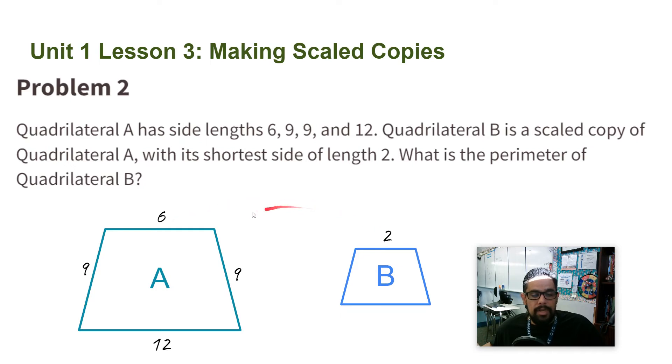I use 6 and 2. These are corresponding sides. There is a scale factor that goes here, and because it's a scaled copy, it's going to be the same for all the other sides. So the scale factor is 1/3. If I do 6 times 1/3, I get 2. So that's the scale factor, 1/3.